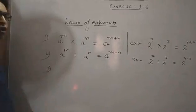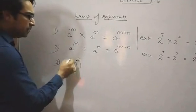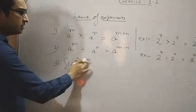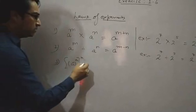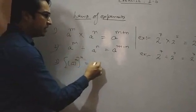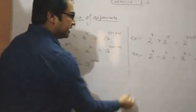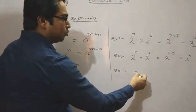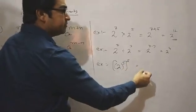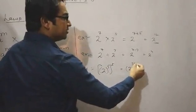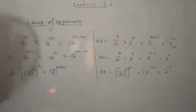The third law of exponent is: if there is a power above the power, like if a raised to the power m whole raised to the power n, then we will multiply the powers, that is a raised to the power m into n. For example, 2 raised to the power 3 whole raised to the power 5 becomes 2 raised to the power 3 into 5, that is 2 raised to the power 15.